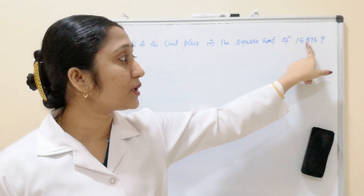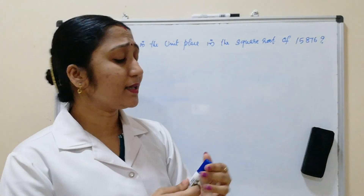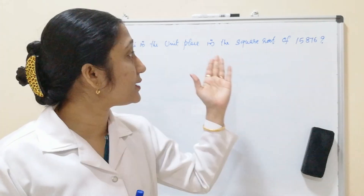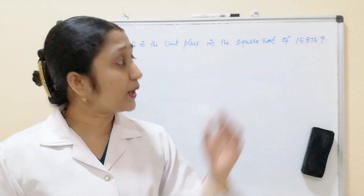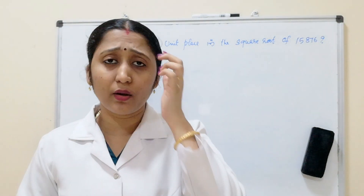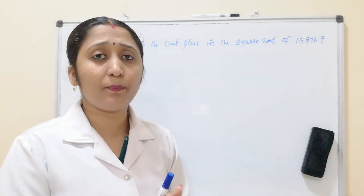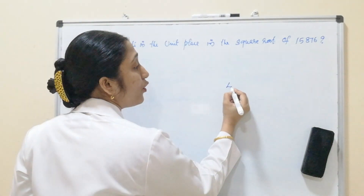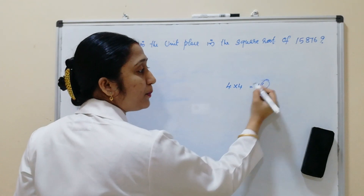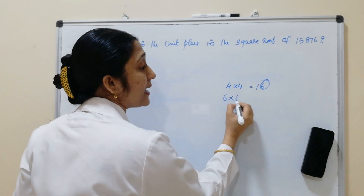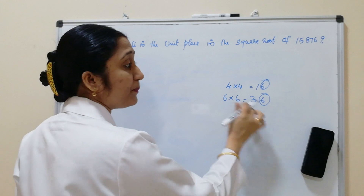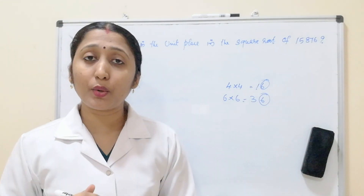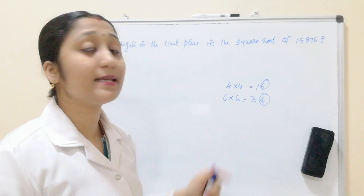But for 15876, if you see this number under the square root, what is the unit place digit in the square root? The last digit is 6. Now, which perfect squares end in 6? 4 squared is 16 — unit place 6. Also 6 squared is 36 — unit place 6. So the answer is either 4 or 6, and that is the question. We need to find it using the long division method.